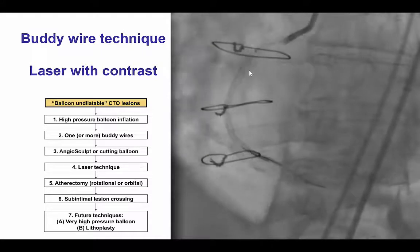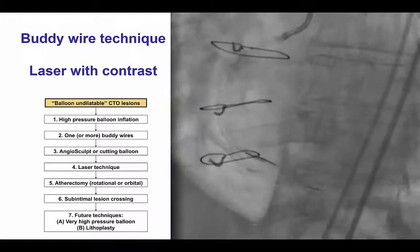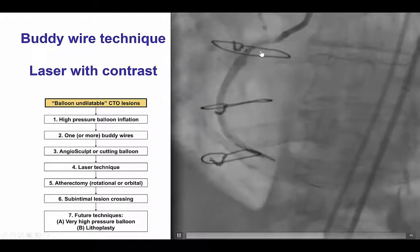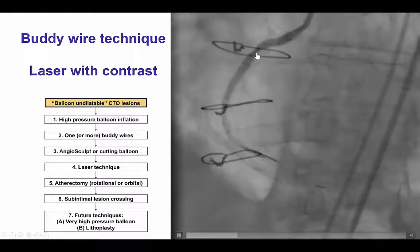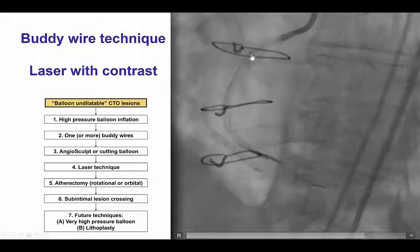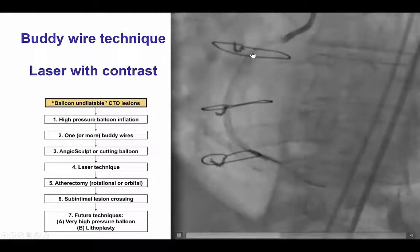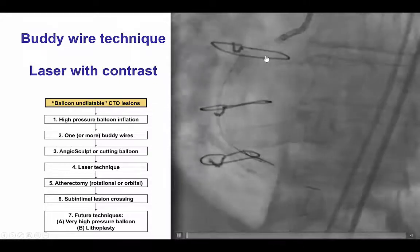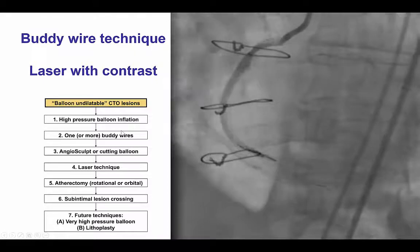After performing that, we performed laser with contrast. This is the 0.9 mm Excimer laser catheter, activated while there are short injections of contrast. This creates a microcavitation effect and an acoustico-mechanical effect — essentially waves propagating into the wall of the vessel and potentially modifying it to allow expansion.